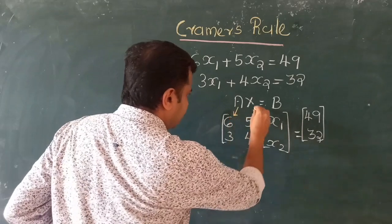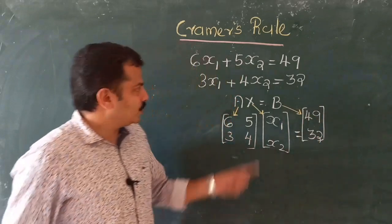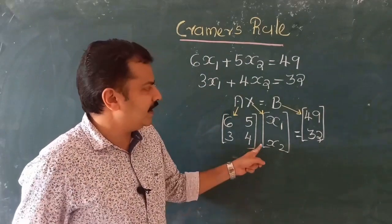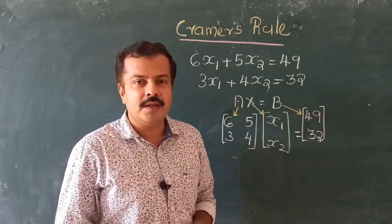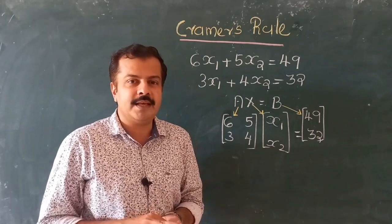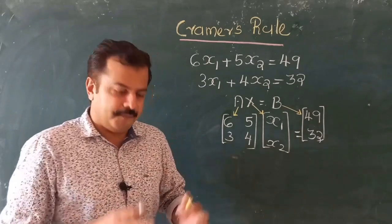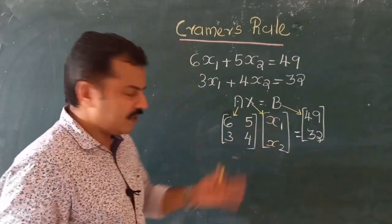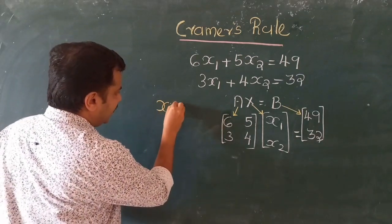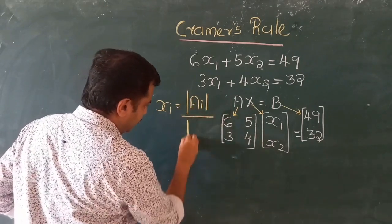This matrix is A, this vector is x, and this vector is b. We have represented the given system of linear equations in the form of matrix algebra. Once you state the equation in matrix form, we can use the concept of determinants to solve it. The formula provided by Cramer's rule is: xi equals the determinant of Ai divided by the determinant of A.